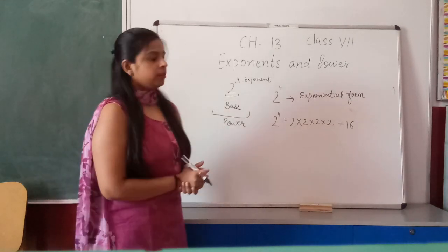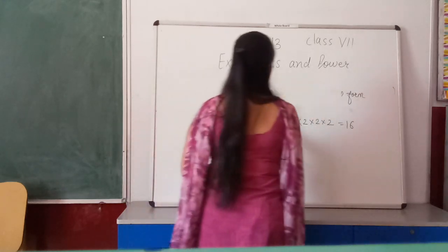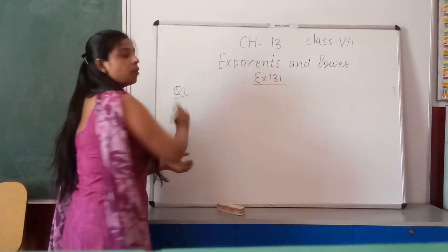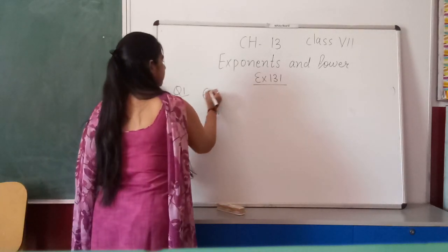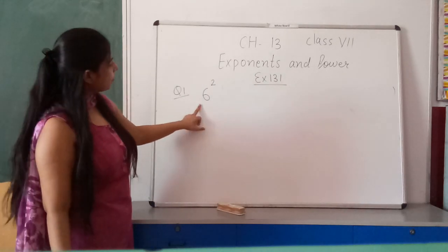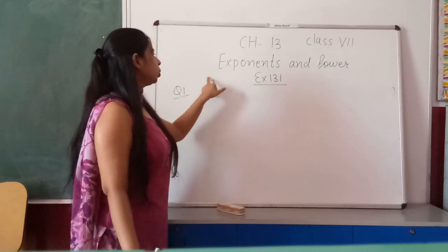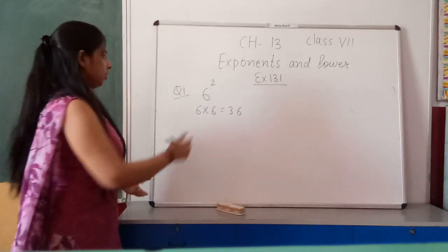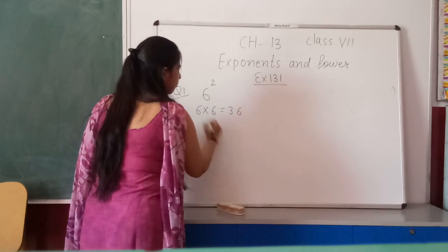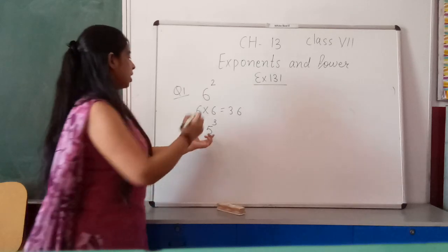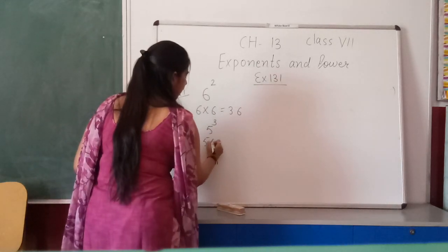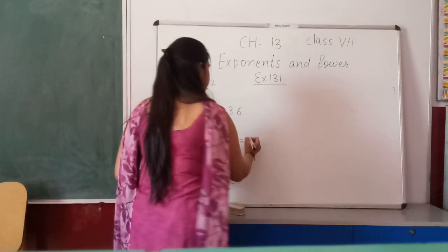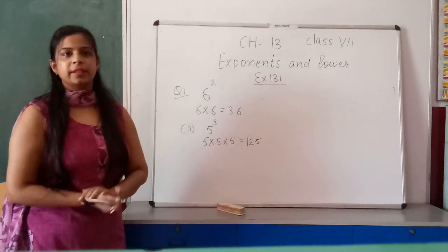Now let's start Exercise 13.1. Question number 1: find the value of 6 raised to power 2. It means 6 is multiplied 2 times, so 6 × 6 = 36. Second part: 5 raised to the power 3 means 5 is multiplied 3 times. So 5 × 5 × 5 = 125. This is the first question of Exercise 13.1.